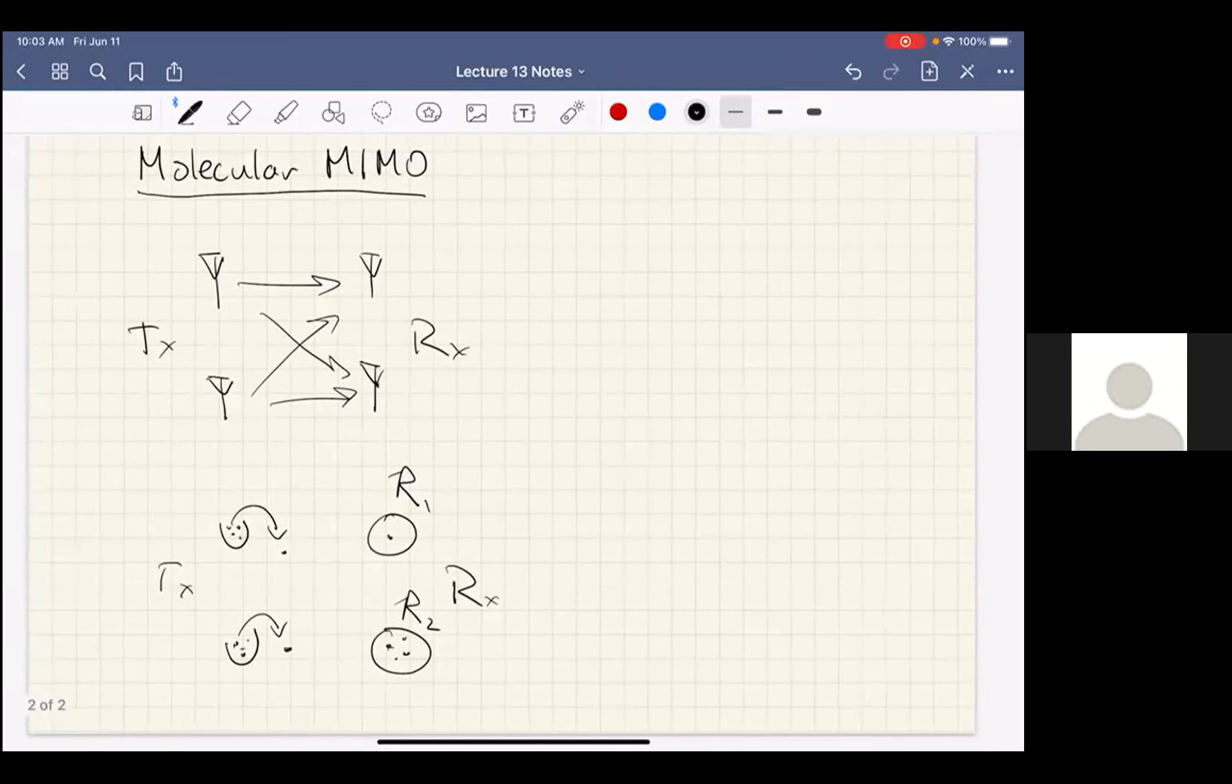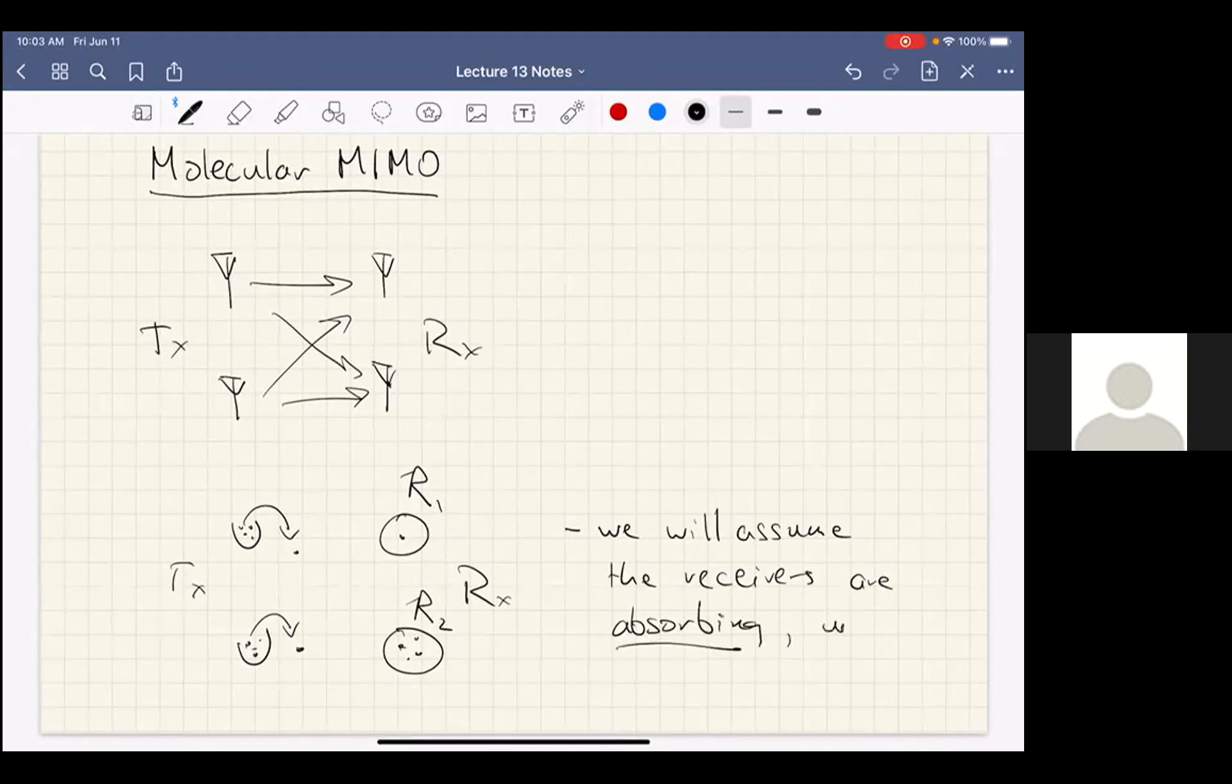So for our purposes here, we will assume the receivers are absorbing, unlike our previous work on CSK. Now you can, if you want, set up a non-absorbing receiver for MIMO. It's just the results that I'm going to explain, the simplest results that are available are derived for absorbing receivers.